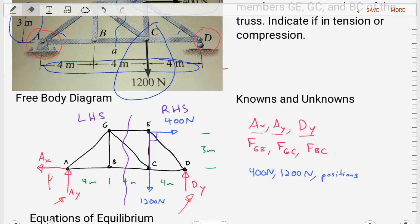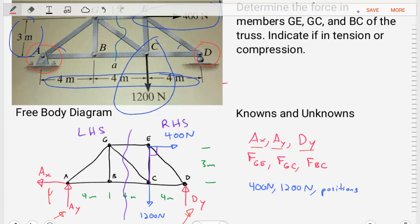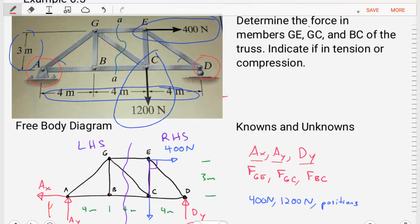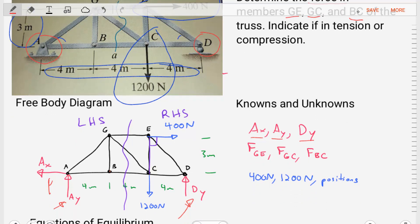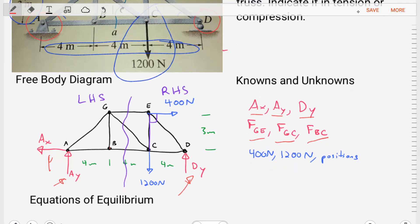Now with that information, let's also go back to our problem statement and note that we're asked to find the forces in these three members. So we'll go ahead and say that the force in GE, the force in GC, and the force in BC, that those are also unknowns.